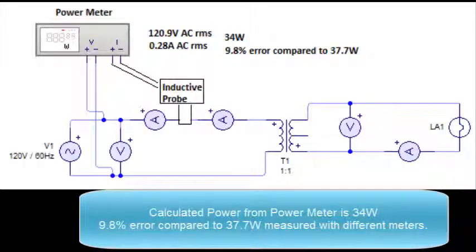Calculated power from the power meter is 34 watts. That's 9.8% error compared to the 37.7 watts measured with different meters.